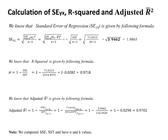For the standard error of regression (SEYX), R-squared, and adjusted R-squared: SEYX = 1.985, R² = 0.9718, and adjusted R-bar² = 0.9702.